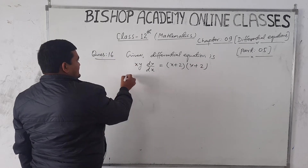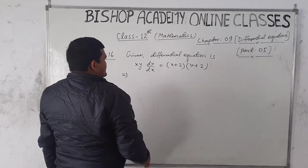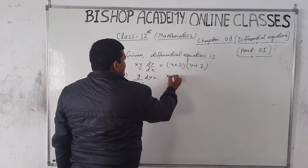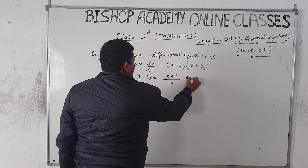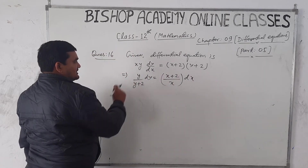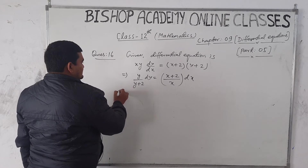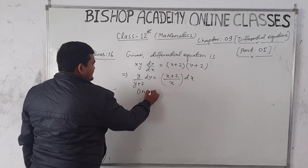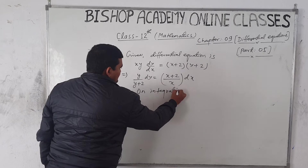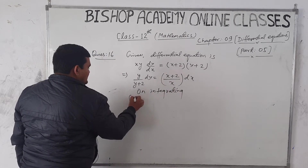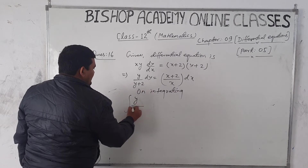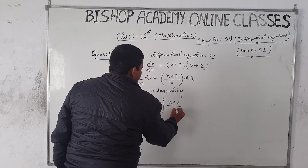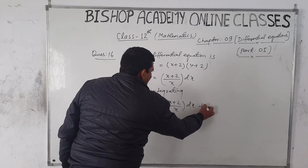Applying variable separation to the given differential equation, we get: y/(y+2) dy = (x+2)/x dx. On integrating both sides: ∫y/(y+2) dy = ∫(x+2)/x dx + C, where C is the integrating constant.